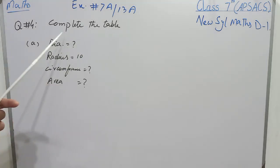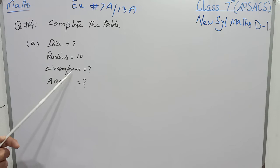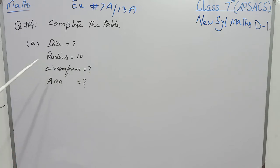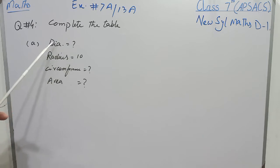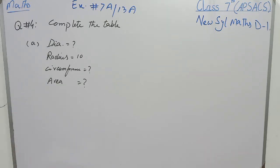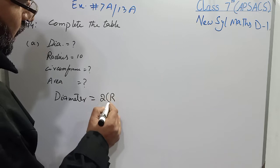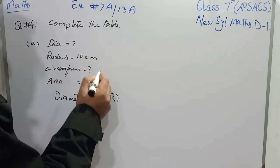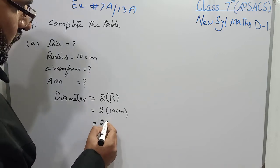Question number 4. There is a table on the book and there are 4 parts. Part A: diameter we have to find, radius is 10 cm, circumference we have to find, and area we have to find. Radius is half of diameter; when we multiply radius by 2 we get diameter. So diameter is equal to 2 into R. The value of R is 10 cm, so 2 into 10 cm gives us 20 cm.